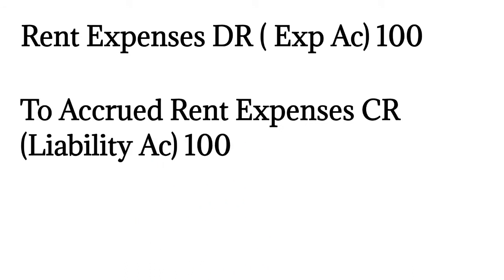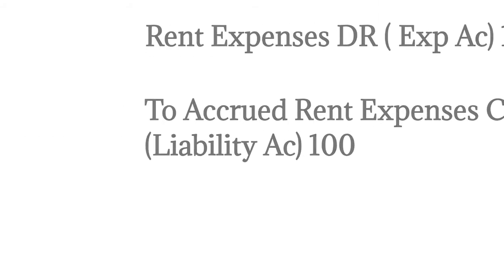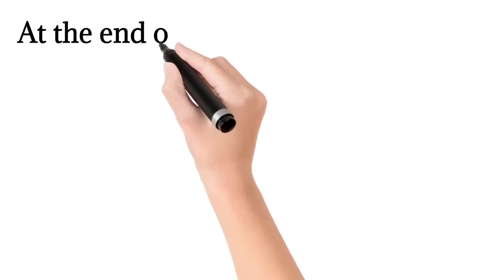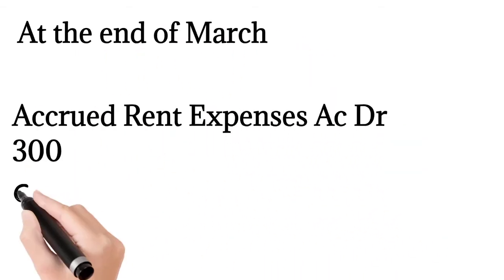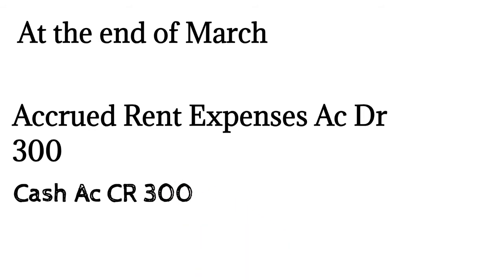Assume that you are accruing $100 as the rent each month. The journal entry is: Rent Expense debit, Accrued Rent Expenses credit for $100. This process is done for January, February, and March, so at the end of March you will have an accrual of $300 in your Accrued Rent Expenses account.